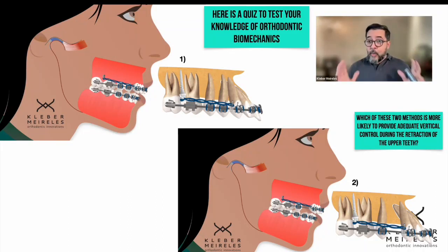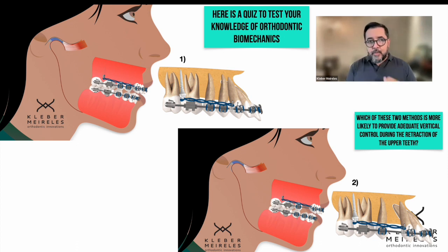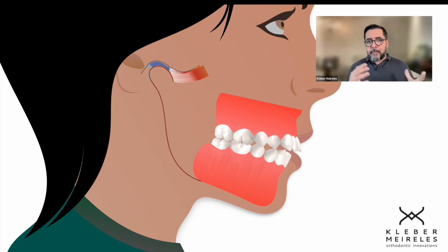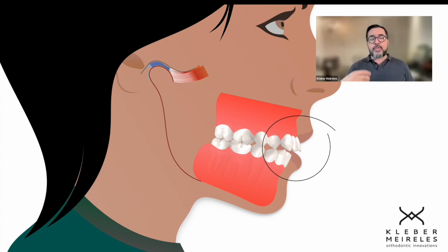The question here is: which of these two methods is more likely to provide adequate vertical control during the retraction of the upper anterior teeth? I'm proposing a quiz so we can understand the best way to do the retraction of upper anterior teeth in a specific situation. We have a patient with a hyperdivergent pattern and excessive exposure of upper anterior teeth at rest lip position — more than expected, and not aesthetically pleasant.